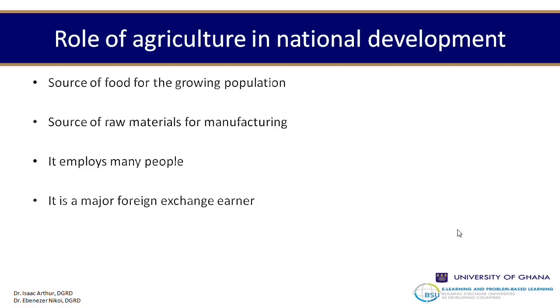Agriculture is basically an economic activity. People depend on it for their livelihoods. In this lecture, you'll also learn that people engage in farming basically to feed themselves — a kind of subsistence form of activity. But looking at agriculture broadly, it is an economic activity, and that's what our focus is on. It serves as a source of food; everybody eats, so basically it's a source of food for our survival.